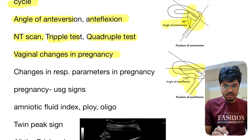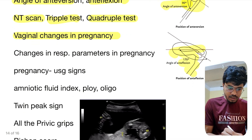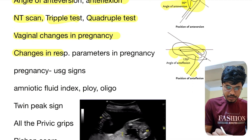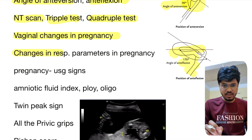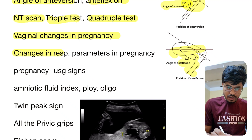Vaginal changes in pregnancy, changes in respiratory system — tidal volume, minute volume — these changes are very important.